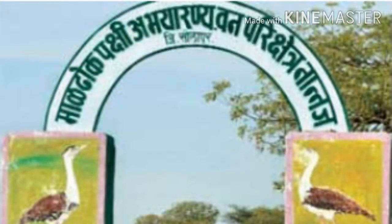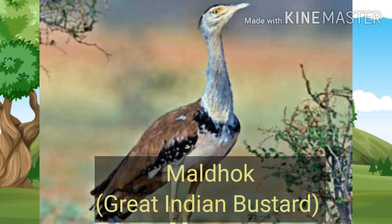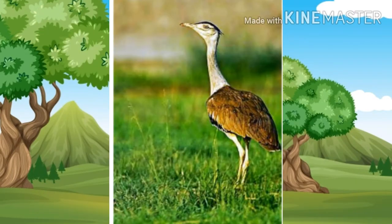There is a Maldok — a Great Indian Bustard sanctuary — at Nanna's in Solapur district. These huge, stately birds are famous for their graceful gait. They live in open grasslands and feed on insects. As they are hunted for their meat and their eggs, their number is fast dwindling — dwindling means decreasing. Maharashtra state has declared the Nanna's area a sanctuary for the Great Indian Bustard.